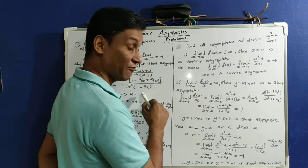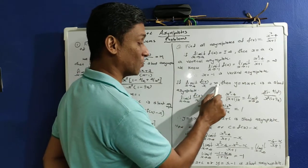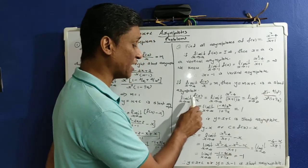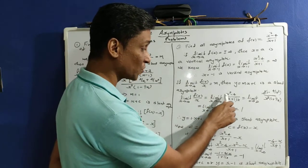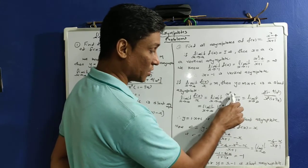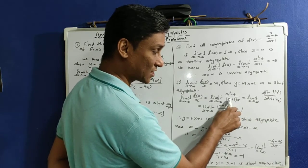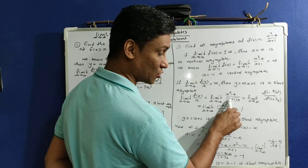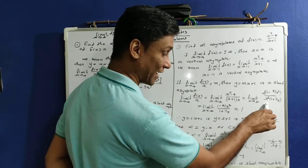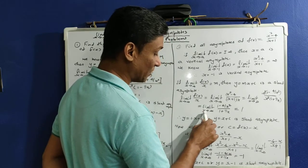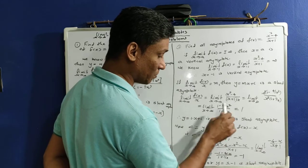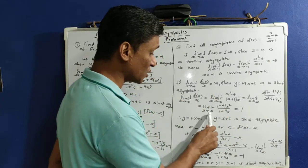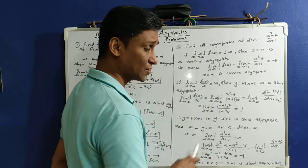For the slant asymptote, if the limit as x tends to infinity of f(x)/x equals m, then y = mx + c is a slant asymptote. We compute: limit of (x² − 4)/(x + 1) · (1/x) = limit of (x² − 4) / (x(x + 1)). Taking x² outside: limit of x²(1 − 4/x²) / x²(1 + 1/x). The x² terms cancel, and the limit equals 1, so m = 1.